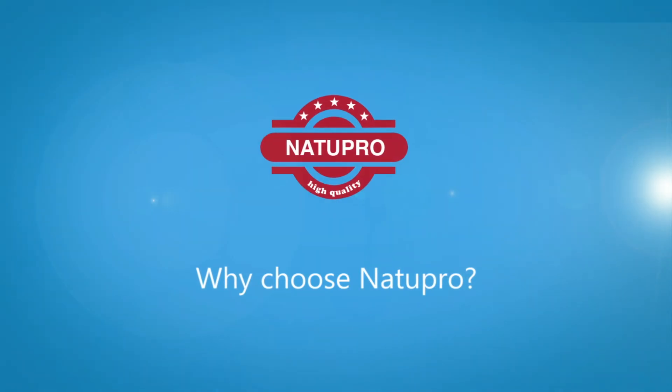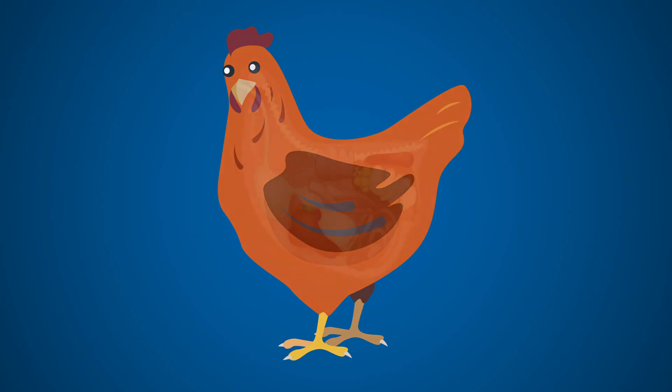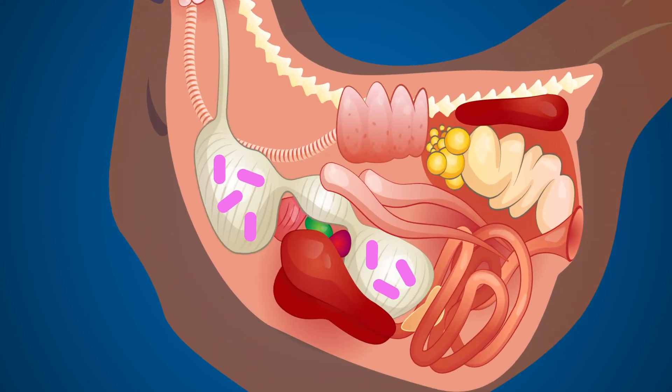So why choose Natupro? The well-being of a chicken depends on maintaining a balanced microbial ecosystem in the gastrointestinal tract. There are bacterial species beneficial to the host organism. However, there are also species which can be harmful. The GI tract of a newly hatched chick or newborn animal is underdeveloped. Therefore, introducing favorable bacteria from day one has a great impact on the intestinal microflora establishment and the future health status of these animals.